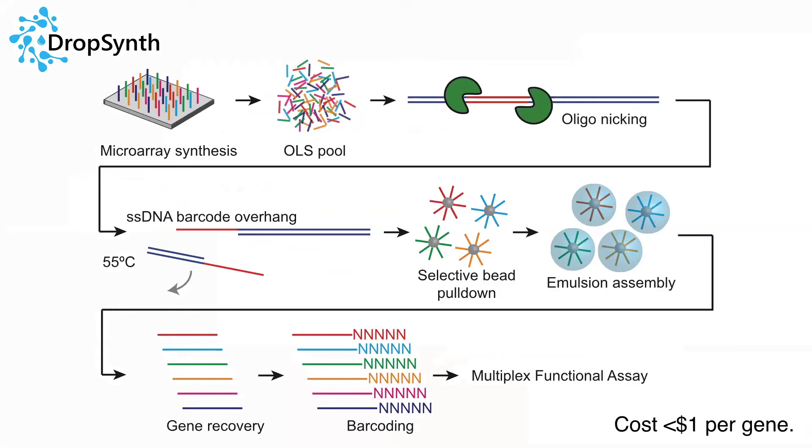And so let me tell you a little thing, a few properties of the characteristics of the resulting libraries. What you're seeing here are each of these dots represents a library of 384 genes, and what you're showing on the right side is essentially the percentage coverage.